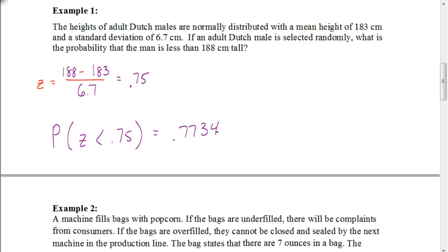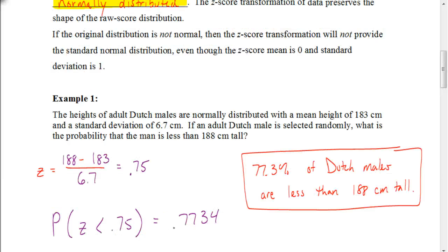So that would be our answer. The way we can interpret this answer is: we could say that 77.3% of Dutch males are less than 188 centimeters tall. Let's look at another example.